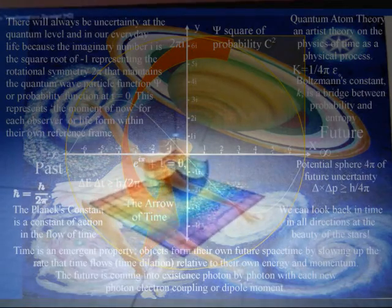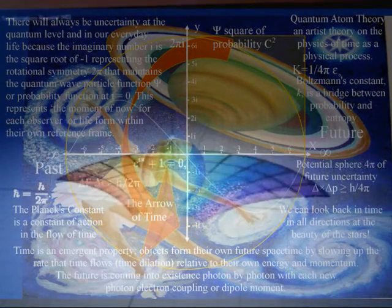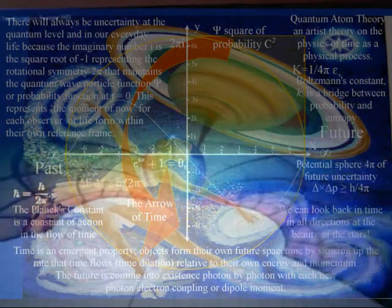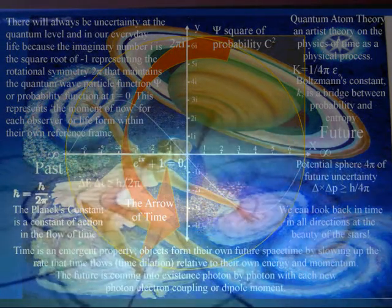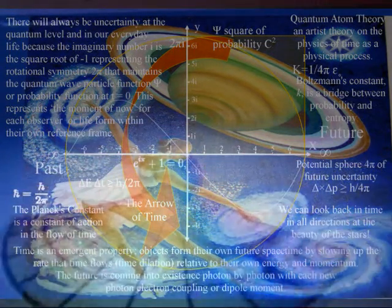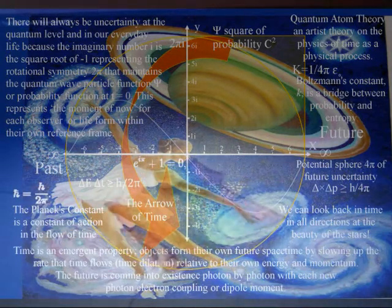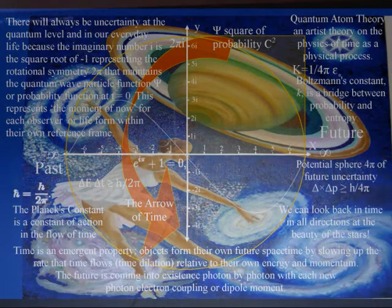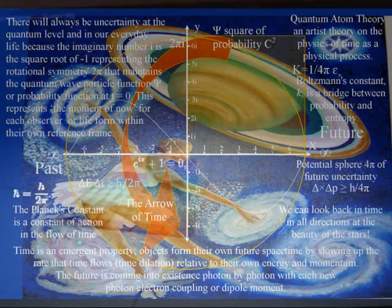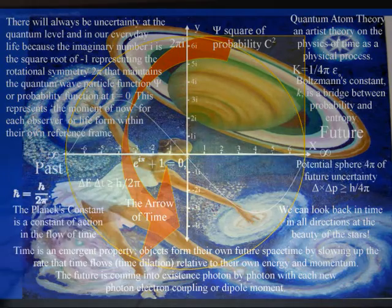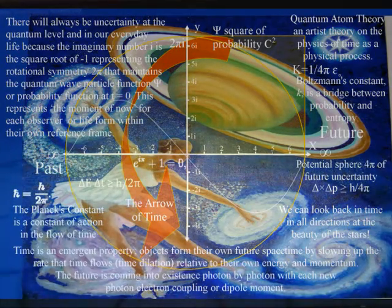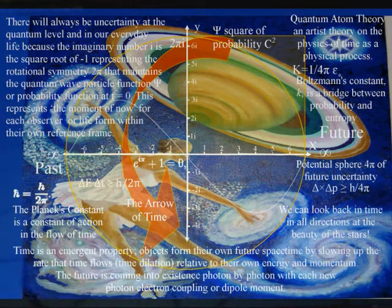An observer who accelerates will see the patterns of constellations as seen in the night sky near Earth continuously transform relative to their acceleration, according to transformations upon the complex plane. This is because each object or observer is forming their own future relative to their own energy and momentum. Therefore, each individual observer can look back in time in all directions from the centre of their own reference frame at the beauty of the stars.